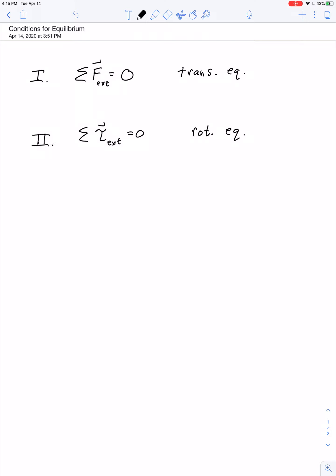Some people will divide condition one into a 1a and a 1b. They'll say condition 1a, the sum of all forces along the x-axis has to equal zero, and condition b,